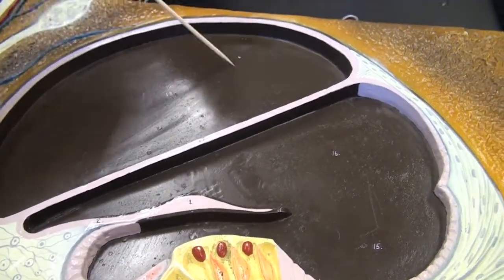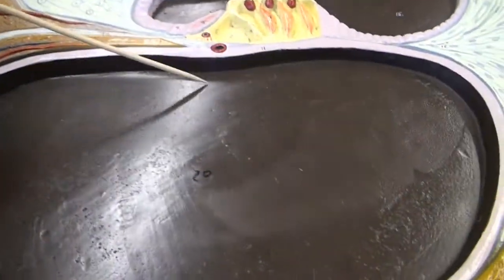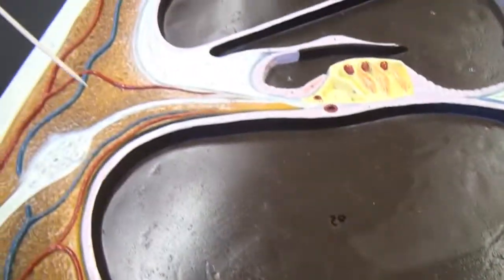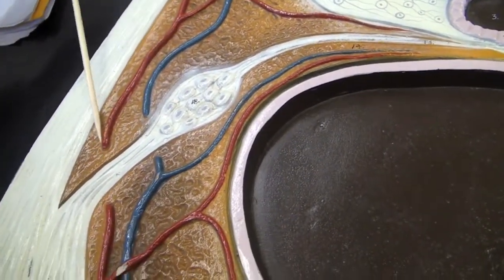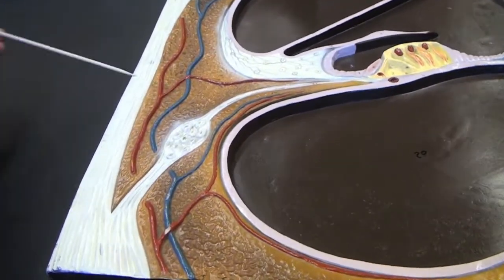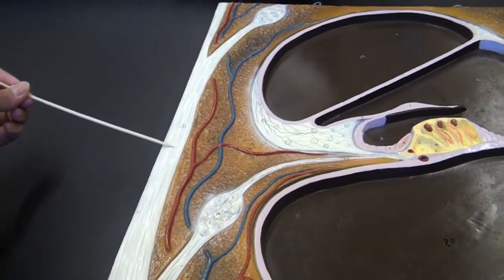Scala vestibuli, scala tympani, spiral ganglion, and on the side is the vestibulocochlear nerve or cranial nerve number eight.